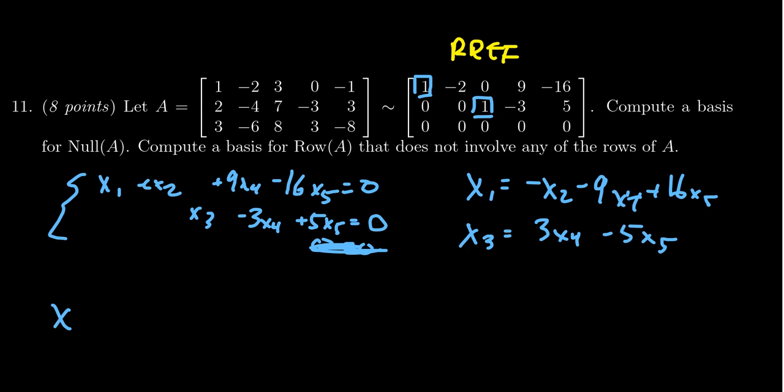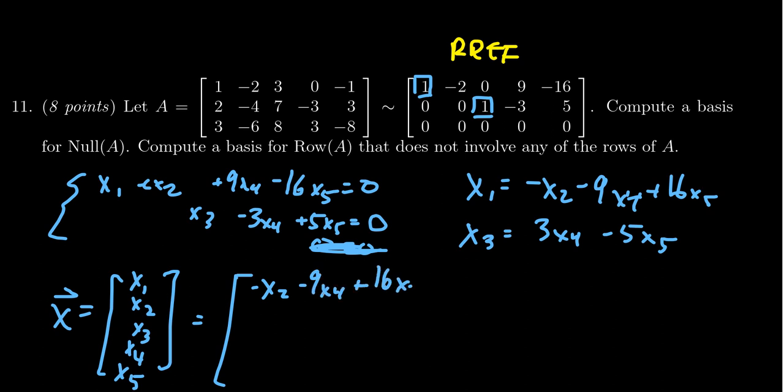We also get that x3 equals 3x4 minus 5x5. Then we can think of the general solution to the homogeneous system: it's this vector with five coordinates x1, x2, x3, x4, x5. Then we substitute in these relationships we found between the free variables and the dependent variables.